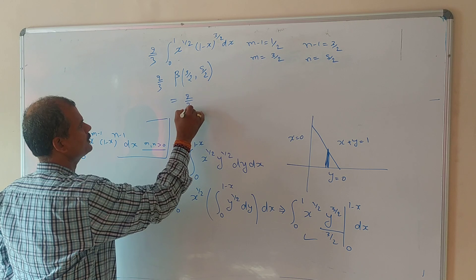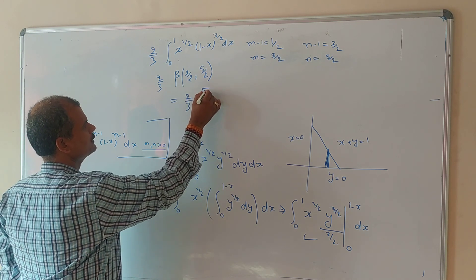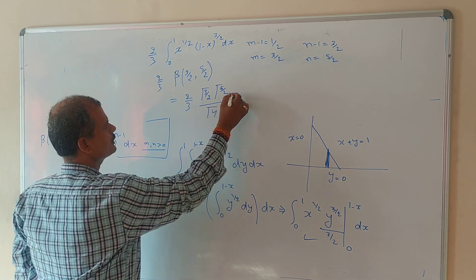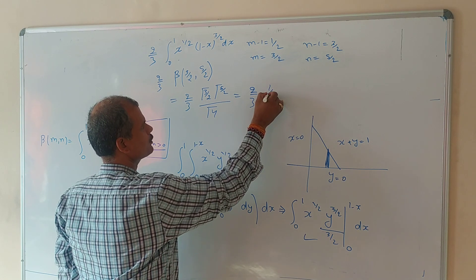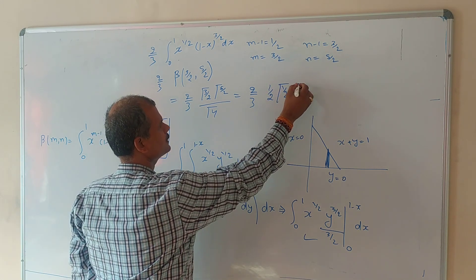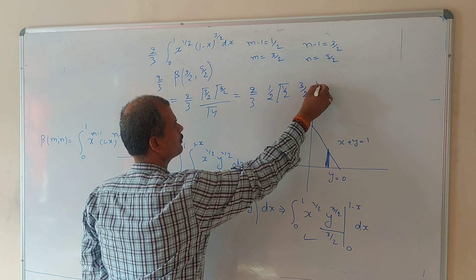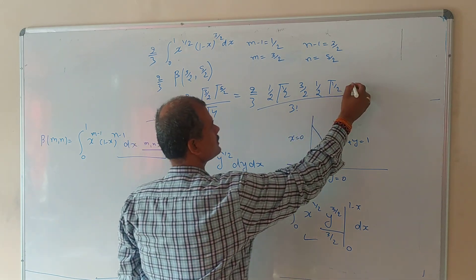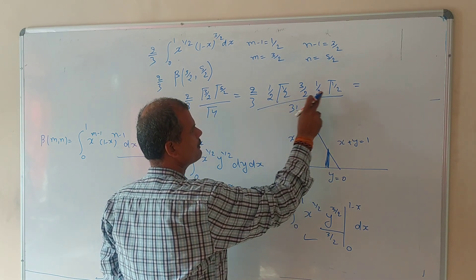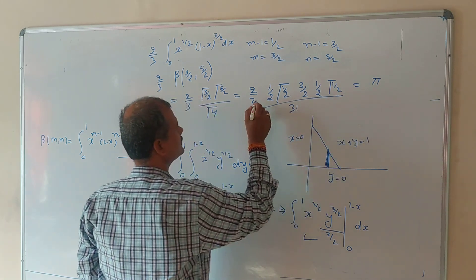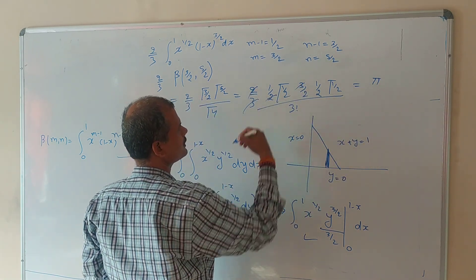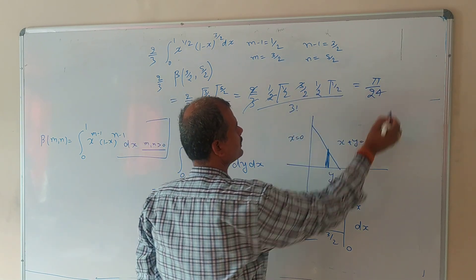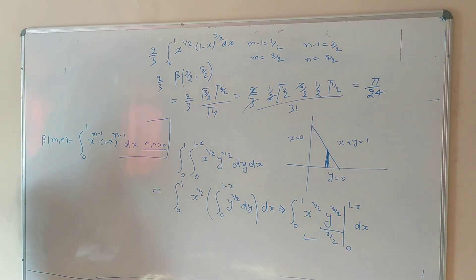Now we can simplify: (2/3) times Gamma(3/2) times Gamma(5/2) divided by Gamma(4). This becomes (2/3) times [(1/2)·Gamma(1/2)] times [(3/2)·(1/2)·Gamma(1/2)] divided by 3! (which is 6). Since Gamma(1/2) equals √π, and simplifying: 3 cancels, 2 cancels, and 3! equals 6, giving us the result π/24.